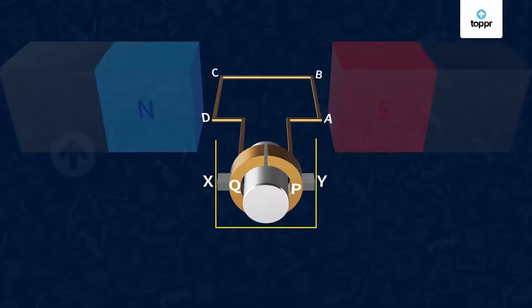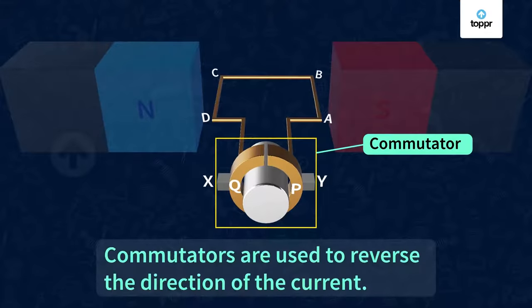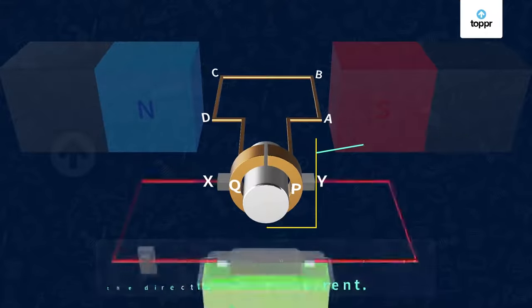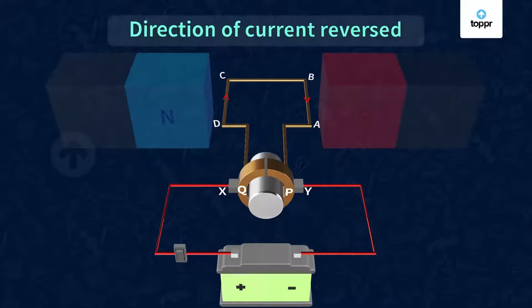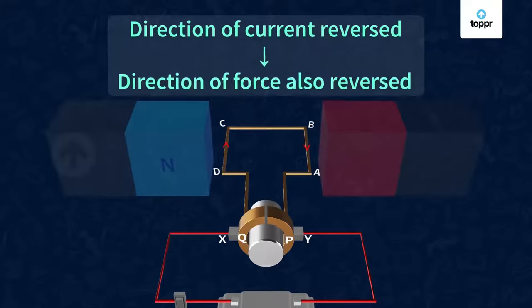Here, this part of the device has a special name. It is called a commutator. Commutators are used to reverse the direction of the current. Now, since the direction of current in the arms AB and CD is reversed, the direction of force acting on it will also get reversed.